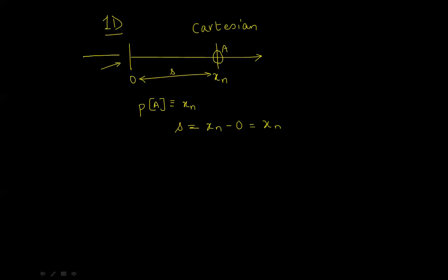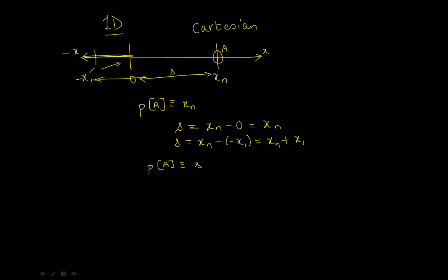However, if I now shift the origin — that is, if I draw the x-axis backwards toward the negative x, and if I say that some point negative x1 is the origin instead of 0 — then the distance traveled will be to negative x1. So s will change to being xn minus negative x1, which will be simply xn plus x1. And that's another method of stating the position of A: at distance s from the origin, which in this case could be either 0 or negative x1. That's the most common system used for 1D position and motion.